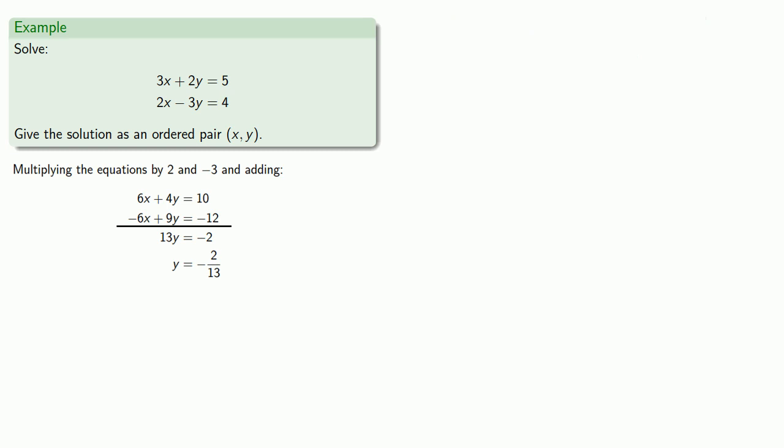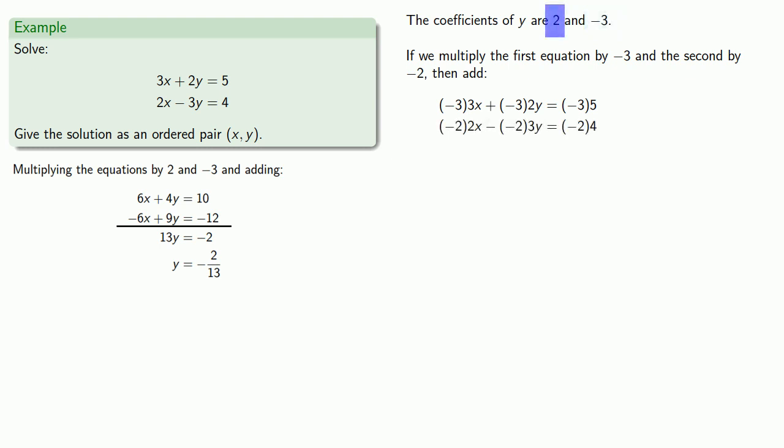So again, we note that the coefficients of y are 2 and negative 3. So if we multiply the first equation by negative 3 and the second by negative 2, we can then add the two equations together, because now our coefficients of y are equal but opposite, and our y terms will drop out.